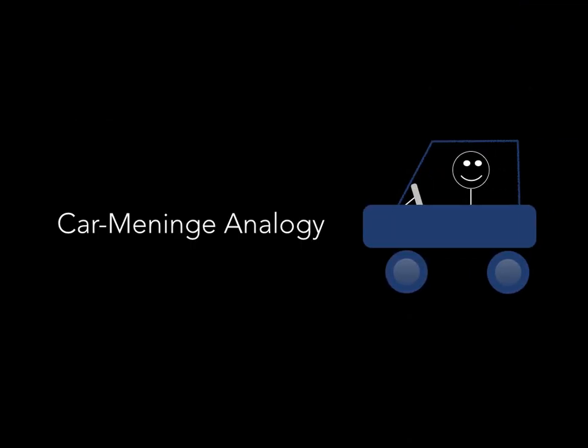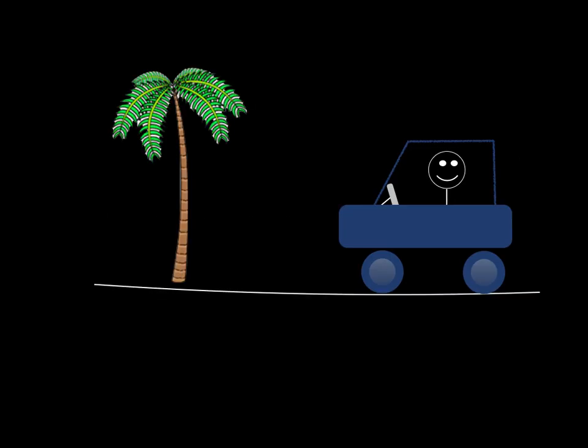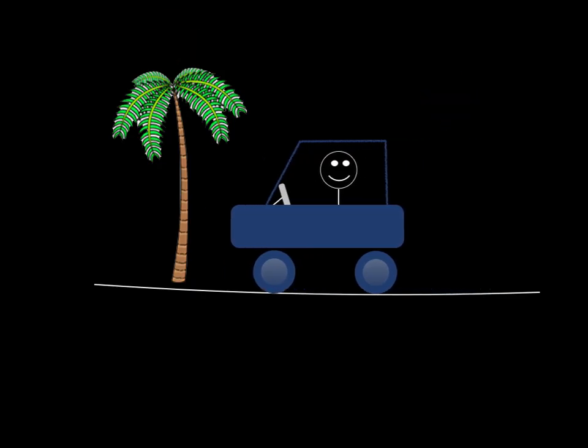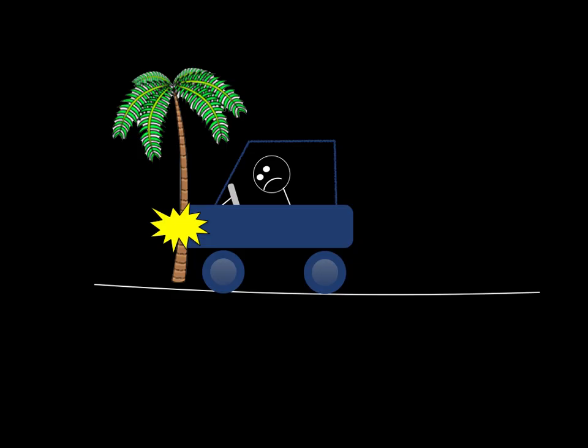To understand the function of the meninges, let's talk about the car meninges analogy. Here we have you driving in a car, there's a tree, and you're driving along and then you crash into the tree. This asks a question: what stopped the man from hitting the tree? Answer: his car.